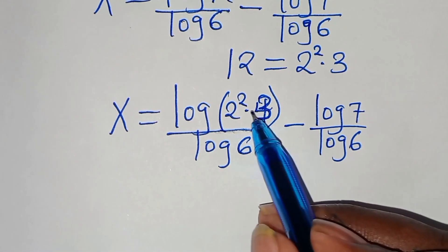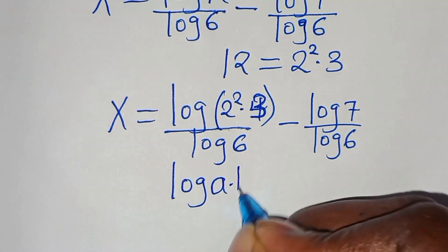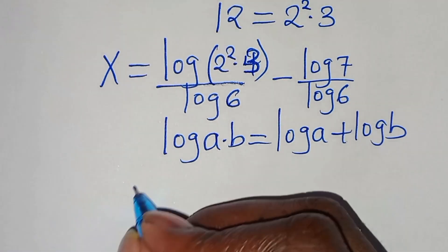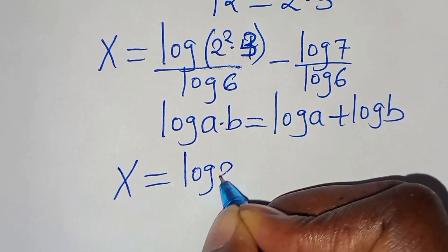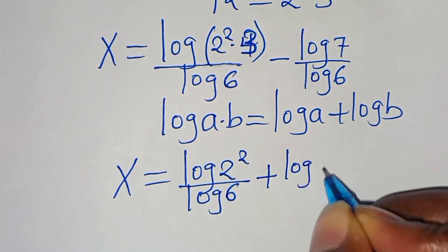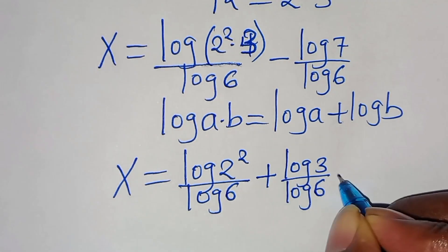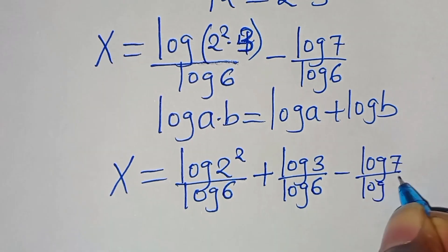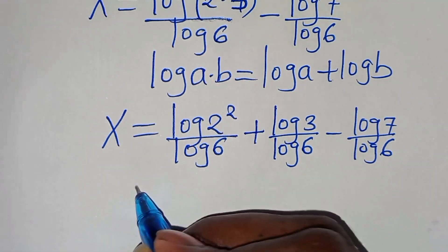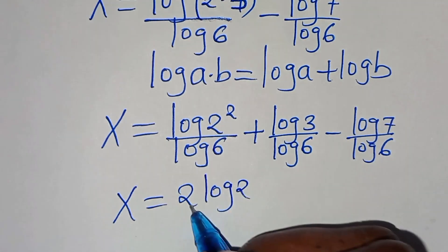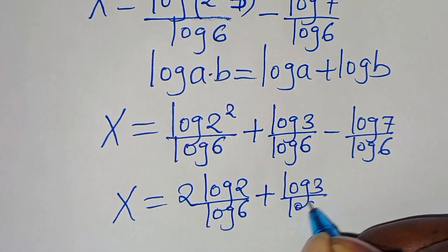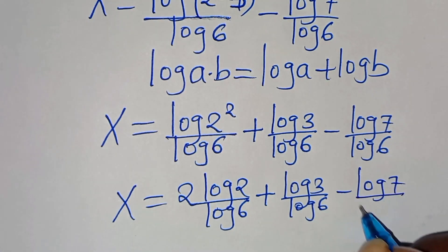Now log(2² times 3) is in the form of log(a times b), which we can express as log a plus log b. Applying this property, x equals log(2²) divided by log 6, plus log 3 divided by log 6, subtract log 7 divided by log 6. Then, using the power rule, log(2²) becomes 2·log 2, so we have 2·log 2 divided by log 6, plus log 3 divided by log 6, subtract log 7 divided by log 6.